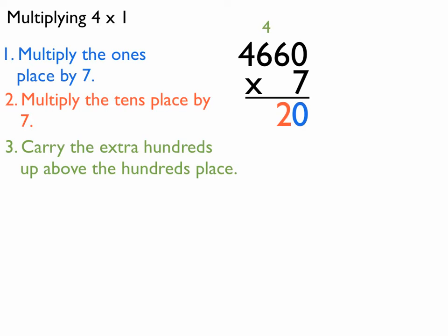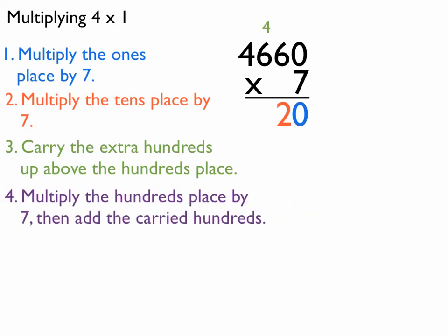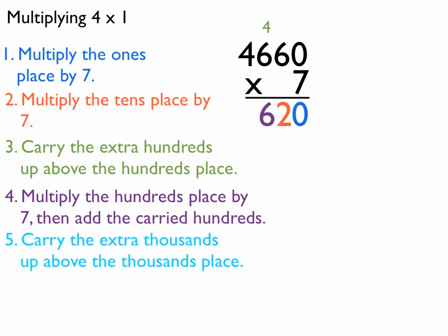Now I multiply the hundreds place by 7 and add the carried hundreds. 7 times 6 is 42, plus 4 makes 46. I put the 6 right there and carry the extra, which is 4 because it was 46 total.